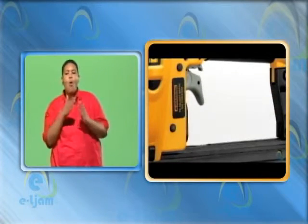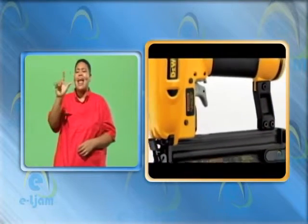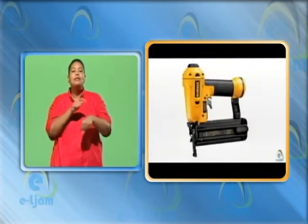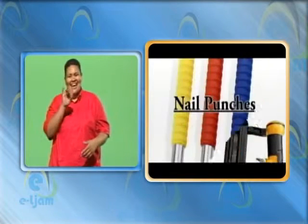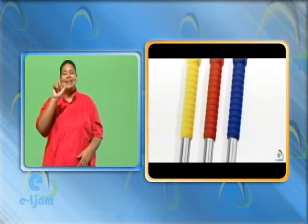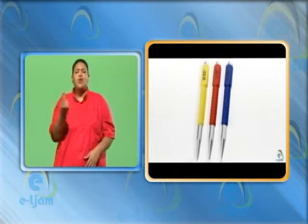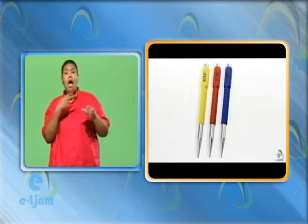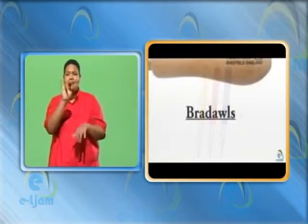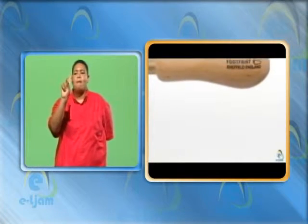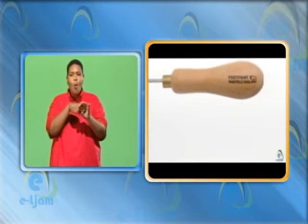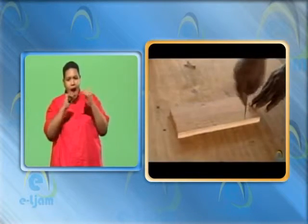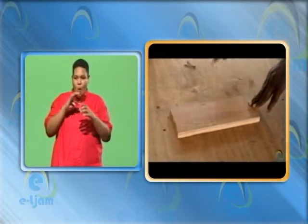Nailing guns are power tools used to reduce the labor time. Usually pneumatic nailing guns are used to drive nails. Nail punches are used to set nails below the surface of the wood, and are available in various sizes to suit the size of the nails. Brad-alls are used to form holes for nails. A brad-all consists of a slender steel stamp with a chisel edge to make holes for nails and screws.